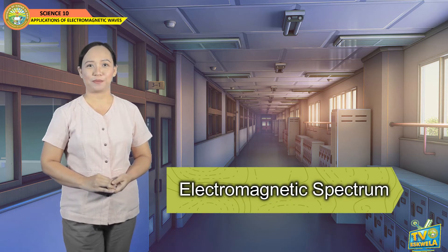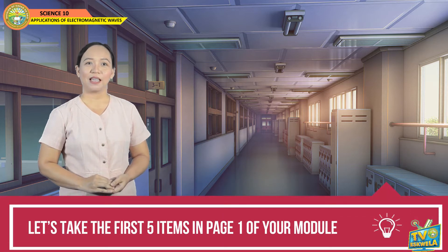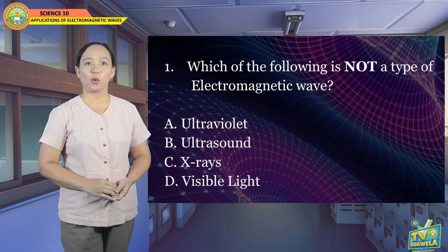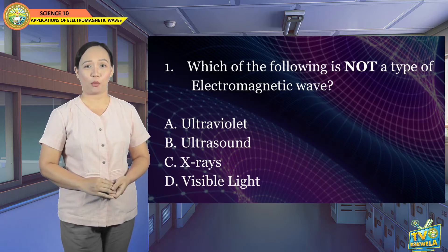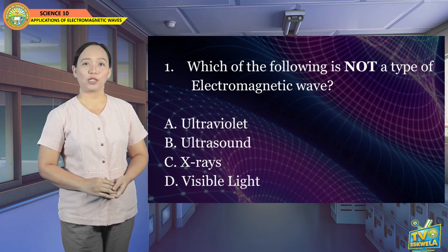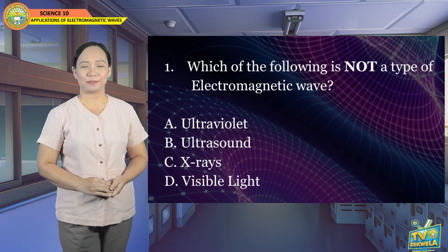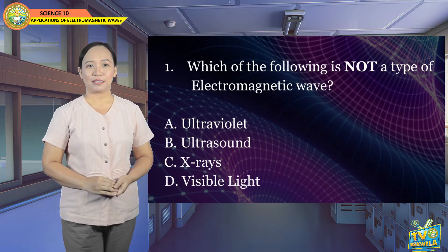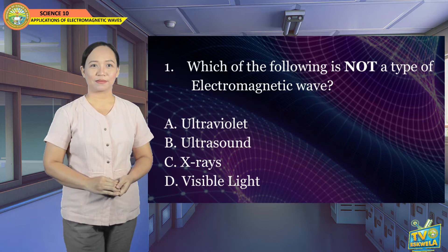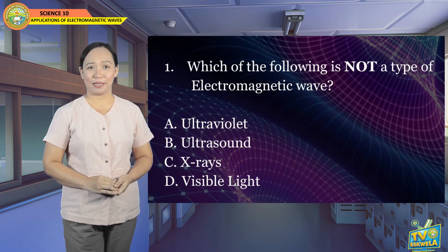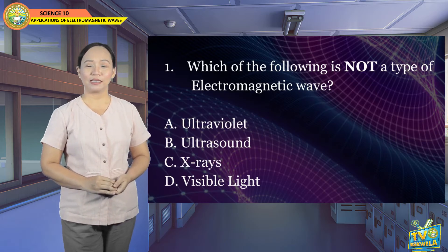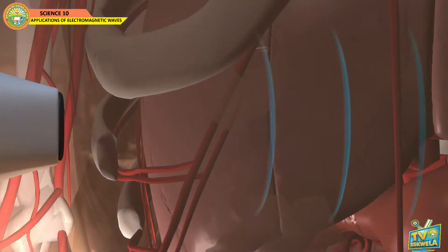Let us assess how well you have understood the electromagnetic spectrum — let us take the first 5 items on page 1 of your module. Number 1: Which of the following is not a type of electromagnetic wave? A. Ultraviolet, B. Ultrasound, C. X-rays, D. Visible Light. The correct answer is letter B — Ultrasound — because ultrasound uses sound waves, not EM waves.